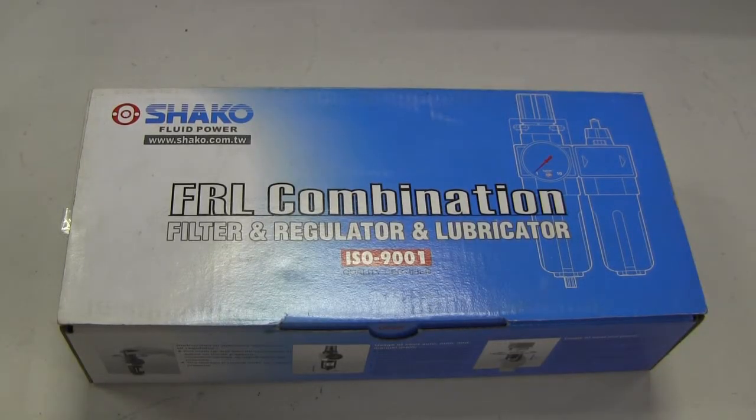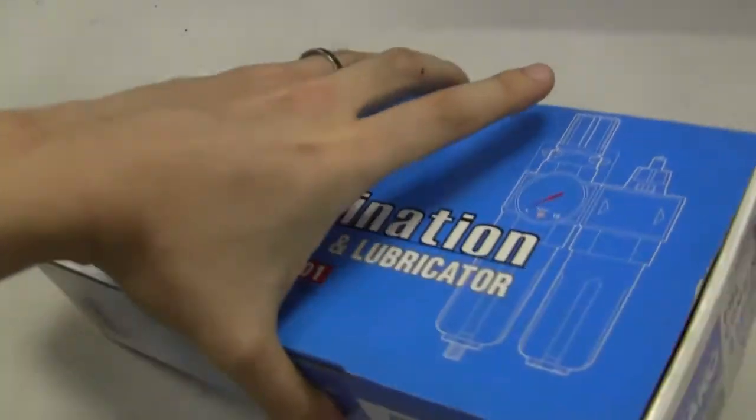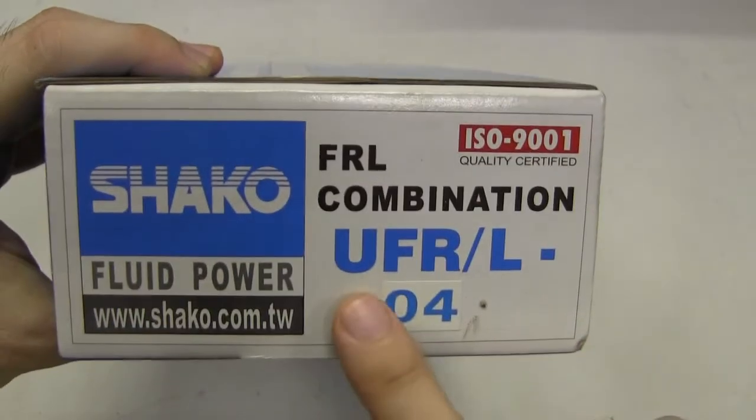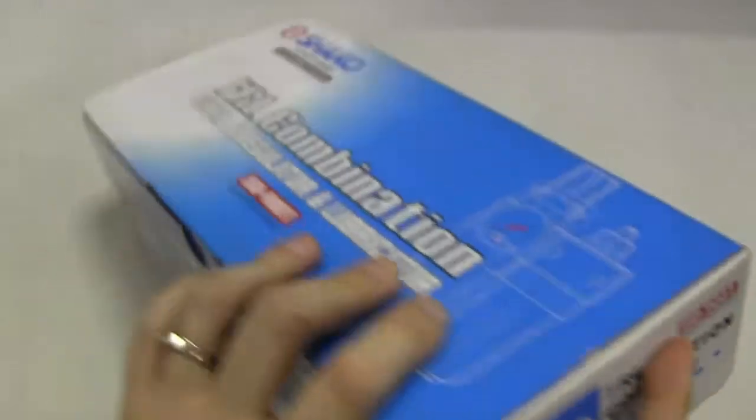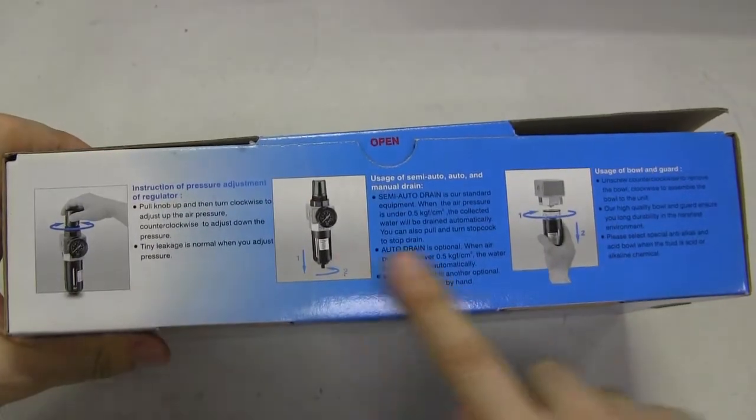Hi guys, what we have here is the filter regulator and lubricator by Shaco Pneumatics. The part number is UFR/L-04, and this is a 1/2 inch port size. We have here how to operate the filter regulator.